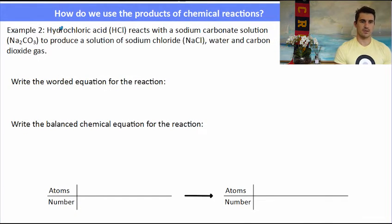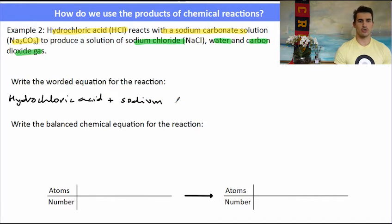Example number two. Hydrochloric acid reacts with sodium carbonate to produce sodium chloride, water and carbon dioxide. So this time we've been given some of the reactants and products but not all of them. It's expected that you would know what water and carbon dioxide are. The worded chemical equation: hydrochloric acid plus sodium carbonate, they're our reactants, reacts to form or goes to sodium chloride, water and carbon dioxide. That is our worded chemical equation.